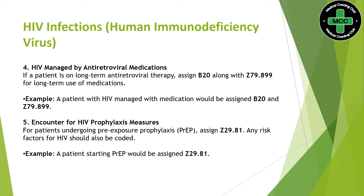Last: encounter for HIV pre-exposure prophylaxis measures. If a patient is exposed or undergoing pre-exposure prophylaxis, we assign Z29.81. Additionally, if any HIV risk factors are present, we assign that code as well. These are the prominent specific coding guidelines for HIV from Chapter 1.